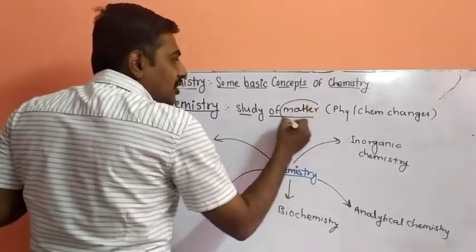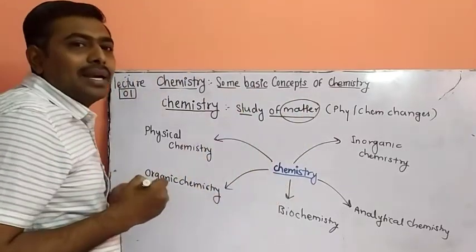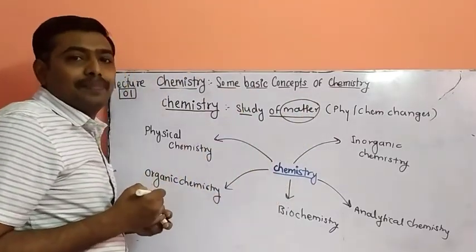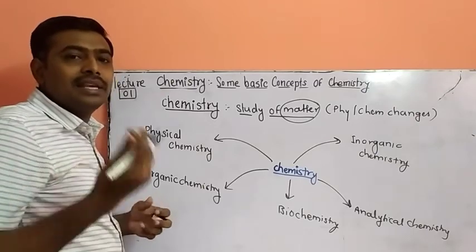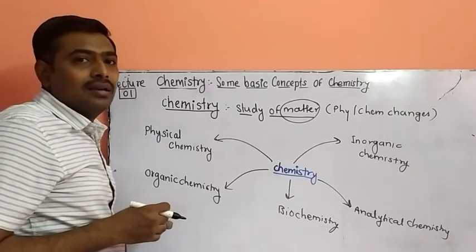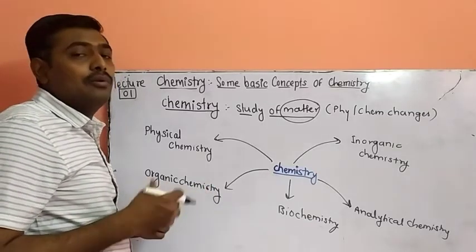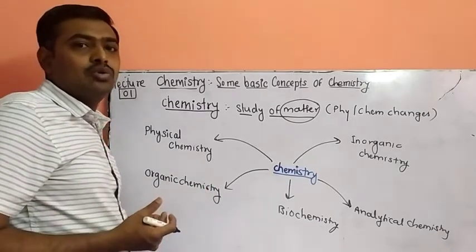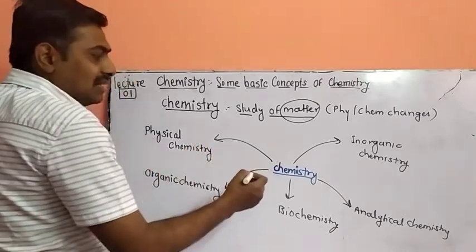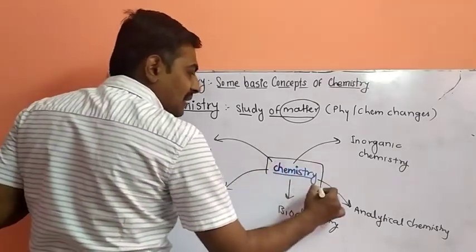Study of matter. You know what is meant by matter? Matter is anything which can occupy space. It's called as matter. It means anything around us is matter, that is solid, liquid and gases. These three are matter. Means everything is chemistry. So we have to study this chemistry with the different branches. What are the different branches of chemistry? Chemistry has these five basic branches.